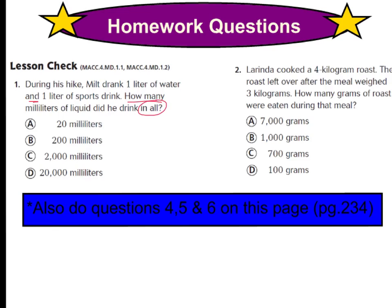As well as number 2 says, Lorinda cooked a 4-kilogram roast. The roast left over after the meal weighed 3 kilograms. How many grams of roast were eaten during that meal? So you know it started out as a large number, 4 kilograms, and then the roast left over after the meal weighed 3 kilograms. How many grams of roast were eaten during that meal? So in other words, what was left over?